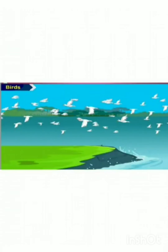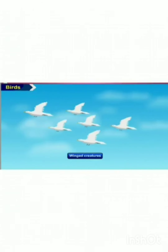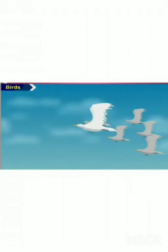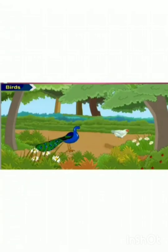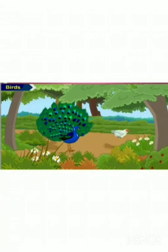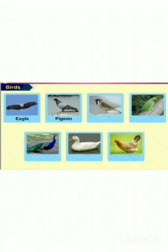Second one: birds. Birds are called winged creatures. They can fly. They have two wings, two legs and one beak. Some birds fly very high while some only hop on the ground. The eagle, pigeon, sparrow, parrot, peacock, duck and hen are some of the birds.